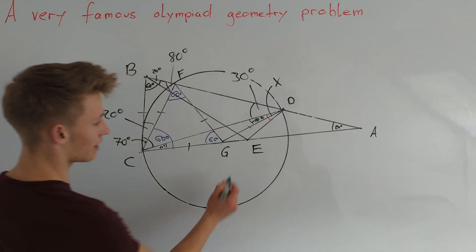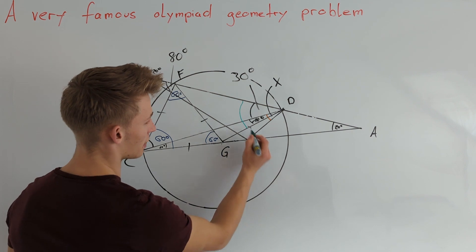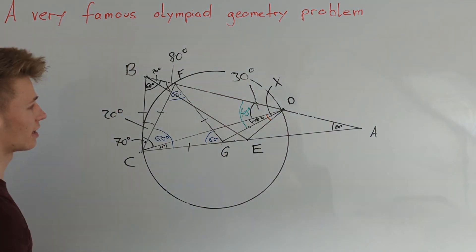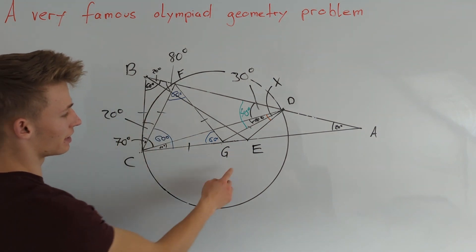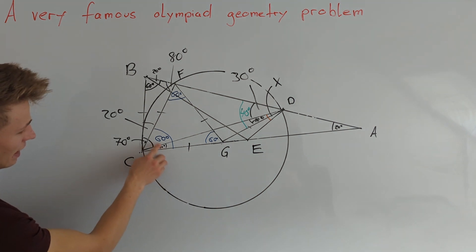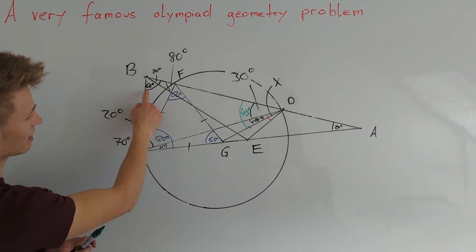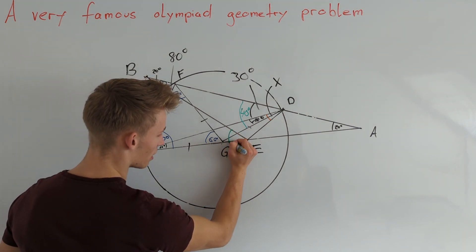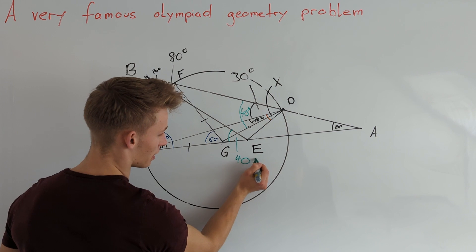From this we directly get that this large angle here is equal to 40 degrees. We can also calculate the angle BEC: this angle is equal to 180 degrees minus 80 degrees, so 100 degrees, minus 60 degrees, equals 40 degrees. So this angle here is also equal to 40 degrees.